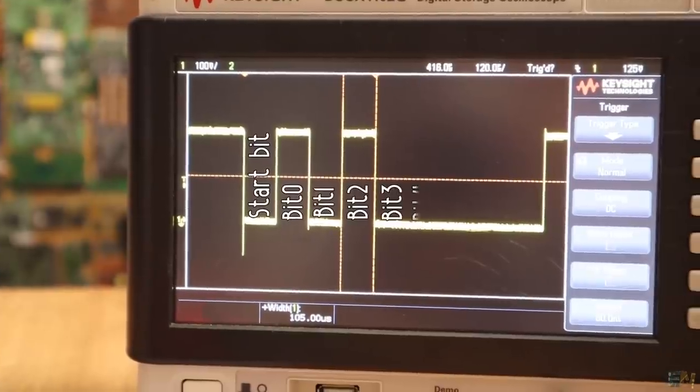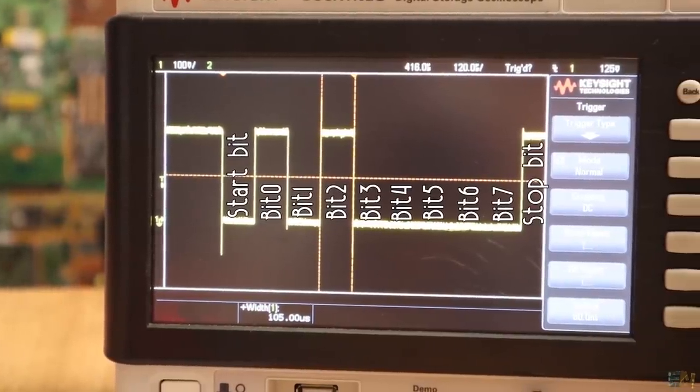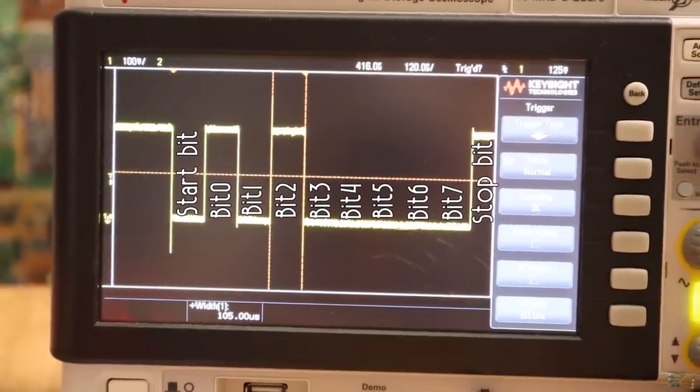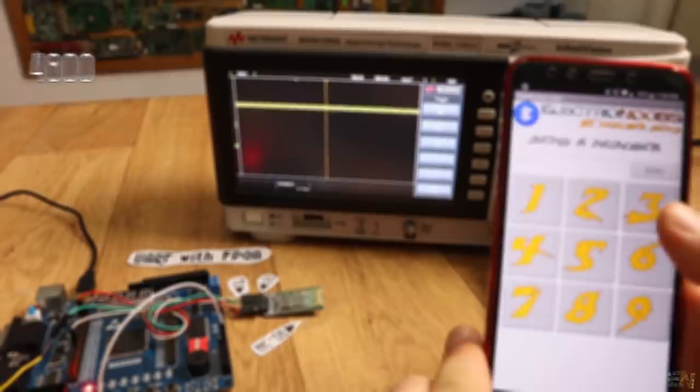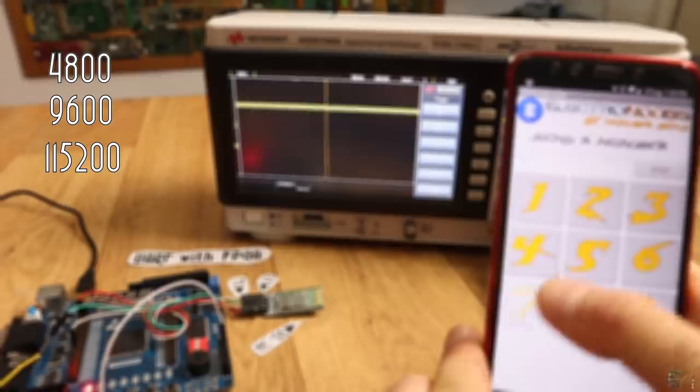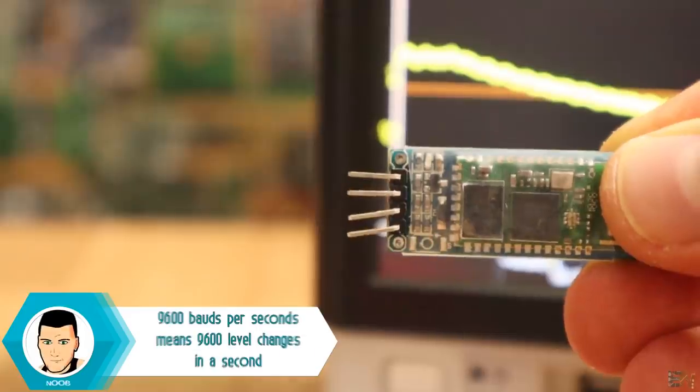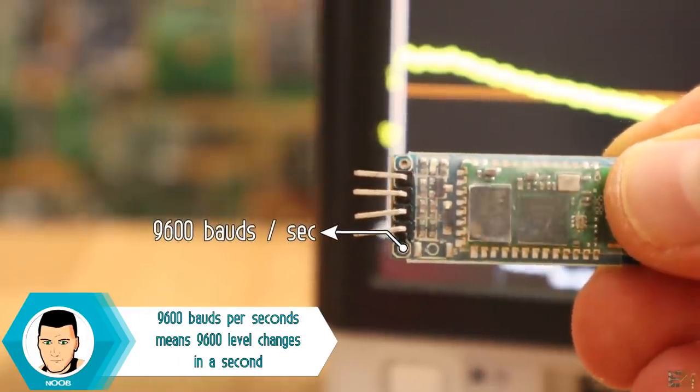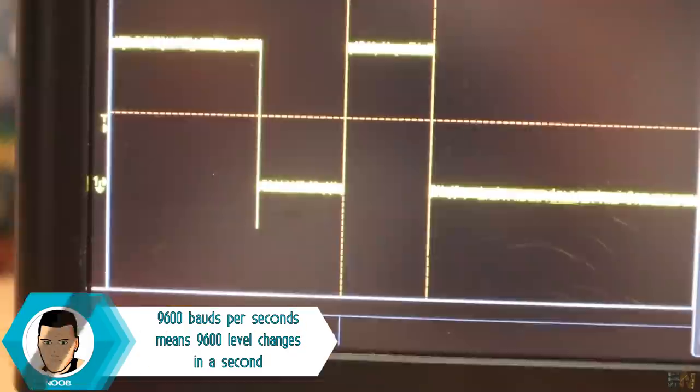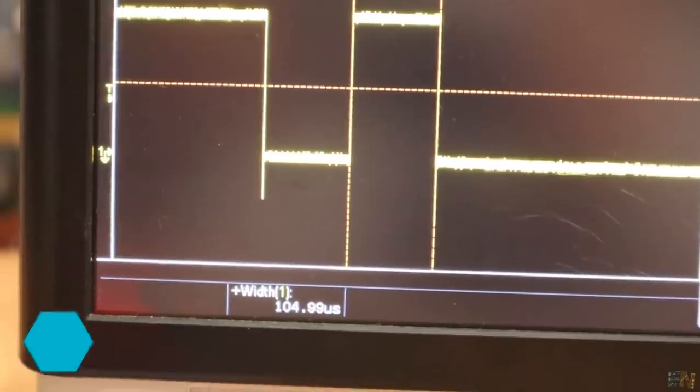Usually, we send 8 bits but it could be any other amount. As for the baud rate, it could be any value but usually there are values such as 4800, 9600, 115200 bauds per second and so on. In case of this Bluetooth module, it is 9600. So that means that the width of the bit should be around 104 microseconds.